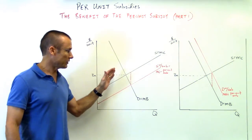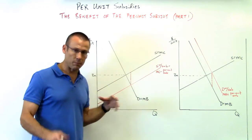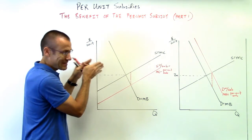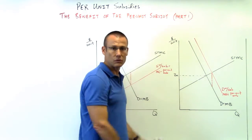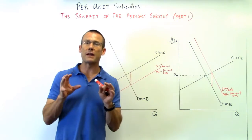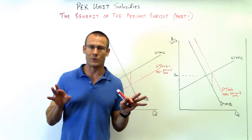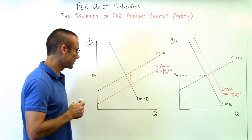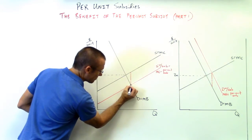So: supply shifted right, and the marginal cost curve went down by the amount of the per unit subsidy when giving it to the supplier. When the government gives the money to the consumer, demand shifts right. But who actually gets the benefit has nothing to do with any of that — it has to do with the elasticity of the curves.